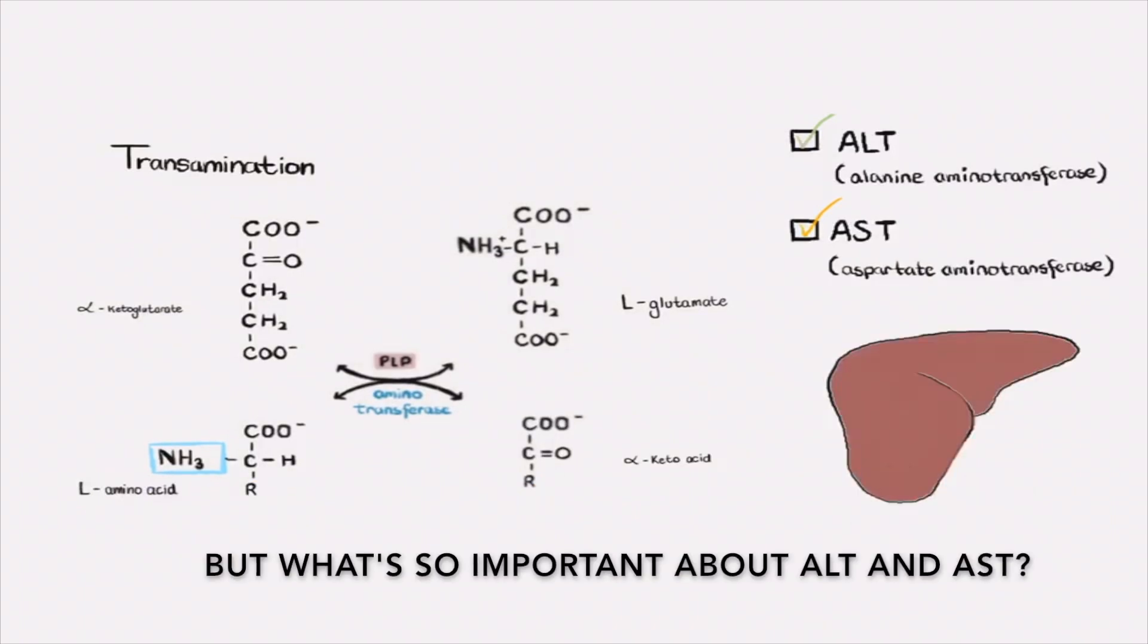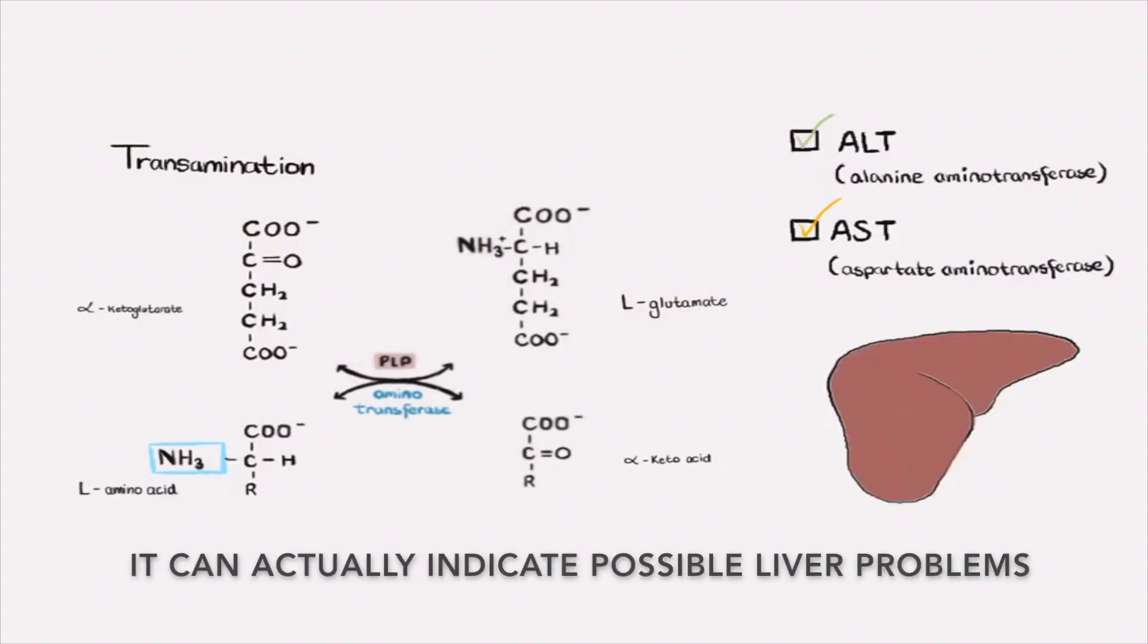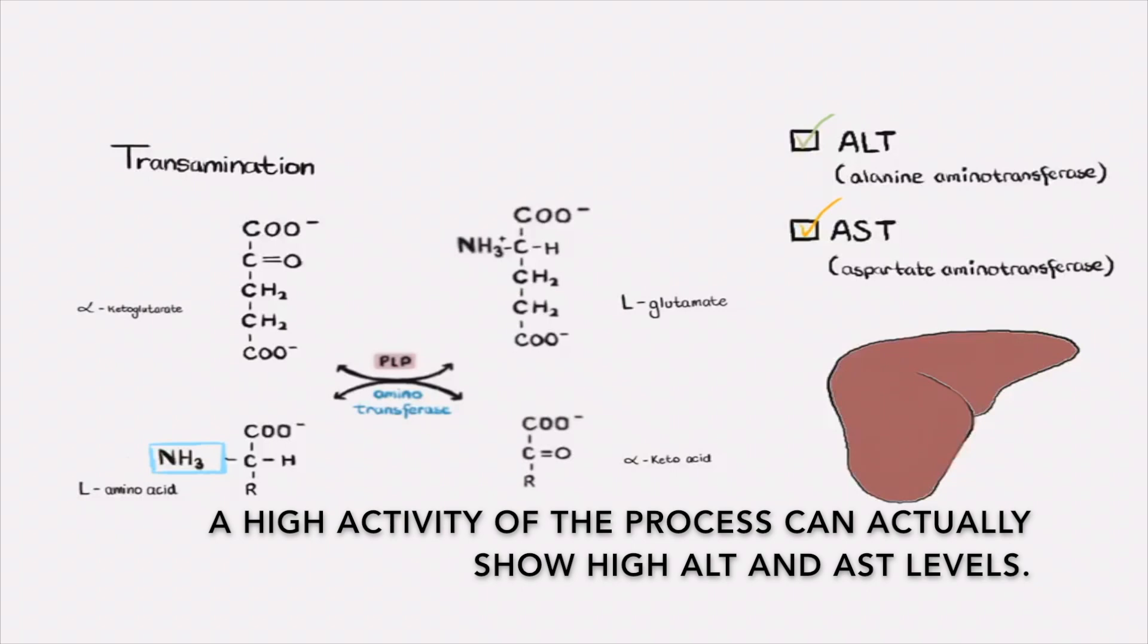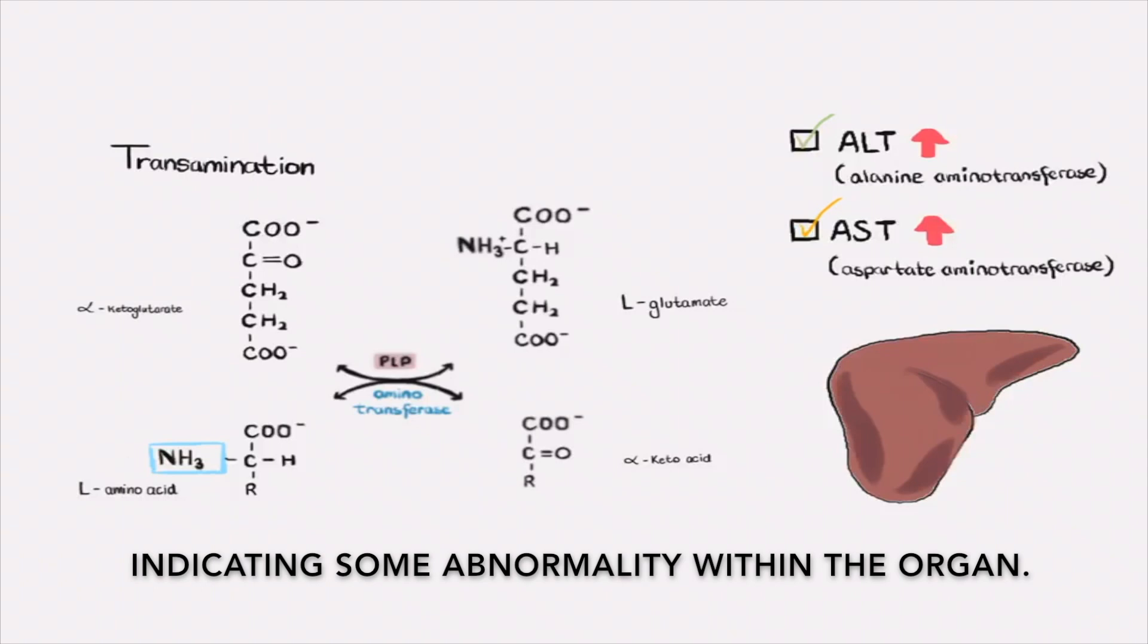But what's so important about ALT and AST? It can actually help indicate possible liver problems. Since transamination occurs in the liver, a high activity of the process can actually show high levels of ALT and AST, indicating some sort of abnormality within the organ.